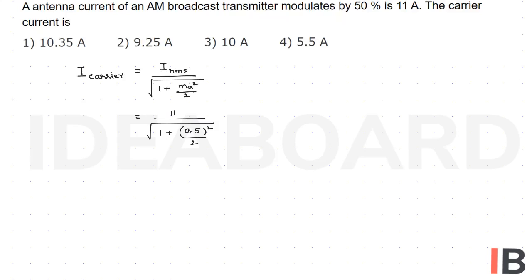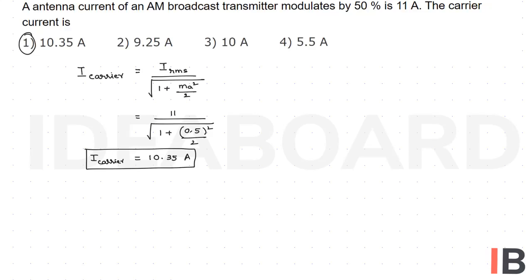After calculating, this value is nearly 10.35 Amperes. So, I_carrier = 10.35 Ampere, and the first option is the right answer.